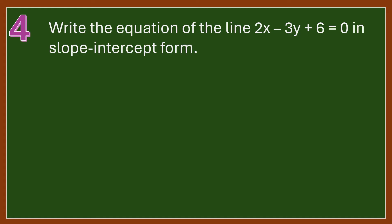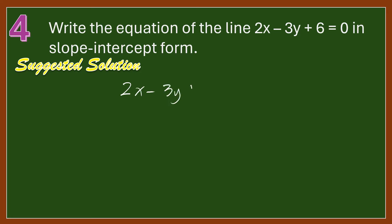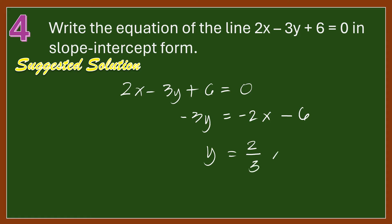Number 4: Write the equation of the line 2x minus 3y plus 6 equals 0 in slope-intercept form. We isolate y on the left-hand side: negative 3y equals negative 2x minus 6. Dividing all terms by negative 3, we have y equals 2/3 x. Since negative 6 divided by negative 3 is positive 2, the answer is y equals 2/3 x plus 2.